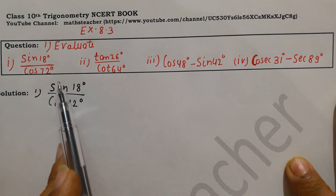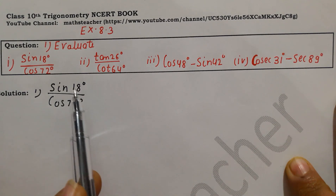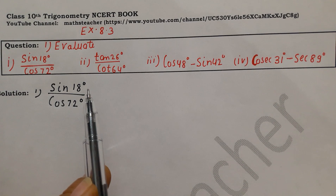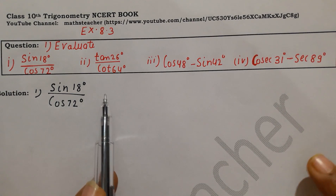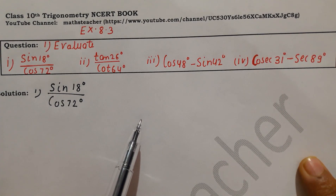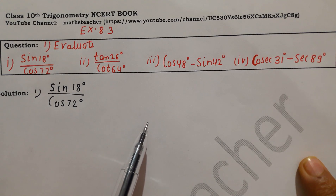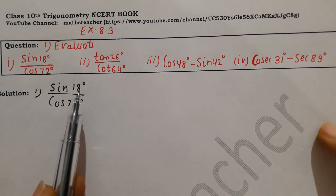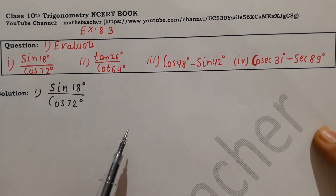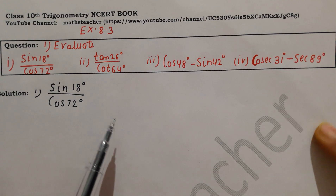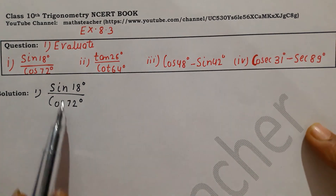We are solving exercise 8.3. We had previously solved 8.2, where the angles given were different — 0, 30, 45. We had the trigonometric table and used those values to solve the questions. But here we don't know the angles from the standard table.